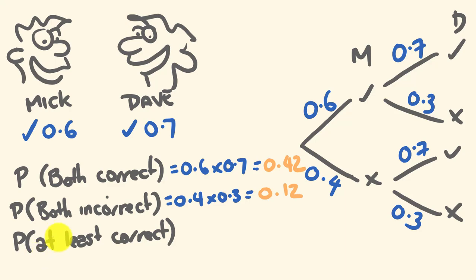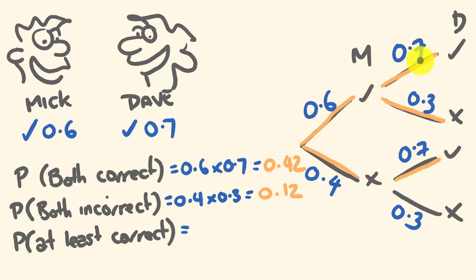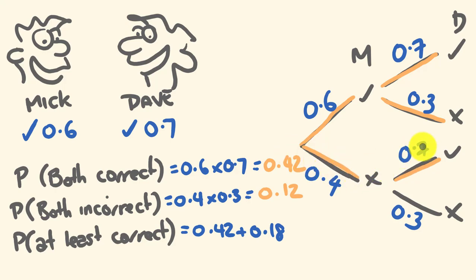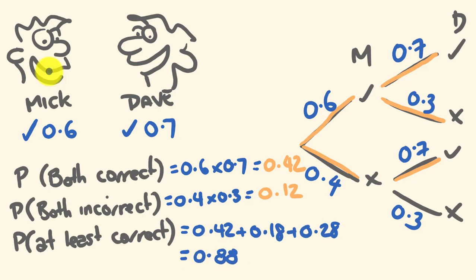For at least one correct, there are three pathways: both correct, Mick correct and Dave wrong, and Mick wrong and Dave correct — but not both wrong. So: 0.6 times 0.7 is 0.42; 0.6 times 0.3 is 0.18; 0.4 times 0.7 is 0.28. We add these together using the addition rule: 0.42 plus 0.18 is 0.60, plus 0.28 gives 0.88.